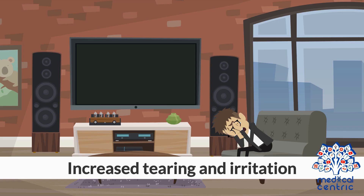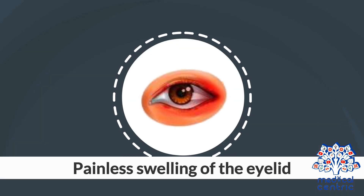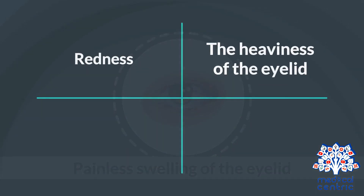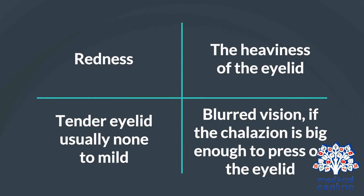Symptoms include increased tearing and irritation, painless swelling of the eyelid, redness, heaviness of the eyelid, tender eyelid (usually none to mild), and blurred vision if the chalazion is big enough to press on the eyelid.